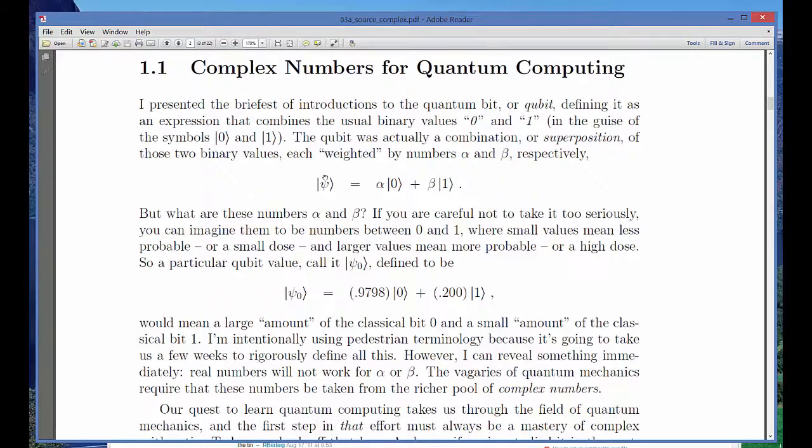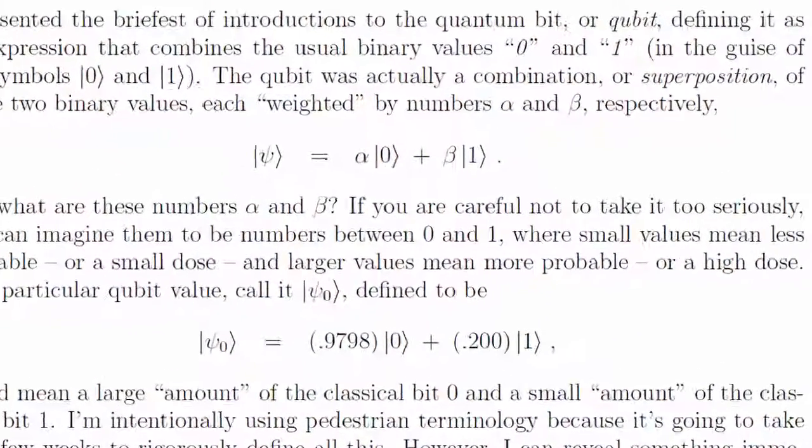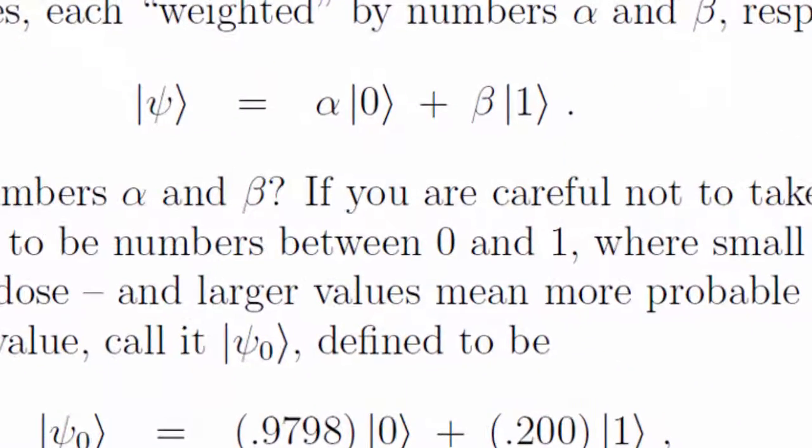Last time, we learned that quantum computing is based on something called a qubit. And although it's too early for me to give you a formal definition, at least I can show you the scribbles that we'll use to write out a qubit when the time comes. This mysterious set of symbols contains two Greek letters, alpha and beta. These guys are complex variables. That is, each represents a complex value which may or may not be known to us at any given moment.